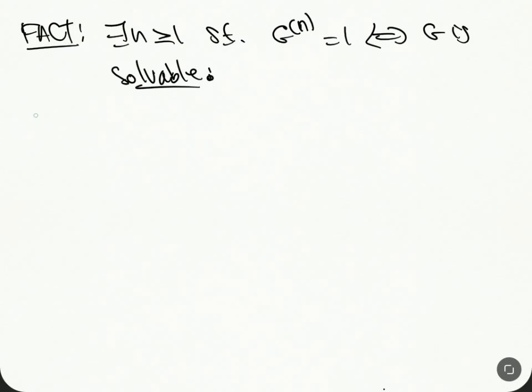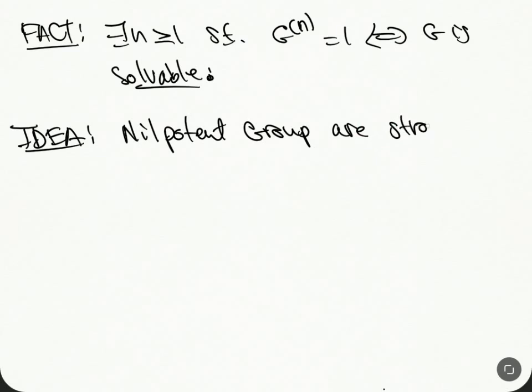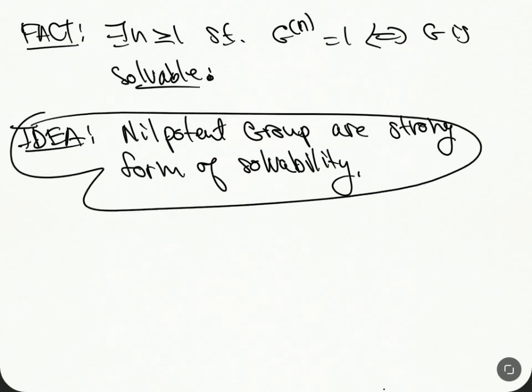Now we can talk about the lower central series. The idea now is that nilpotent groups are a strong form of solvability. To define nilpotent groups we're going to define it in a similar way.